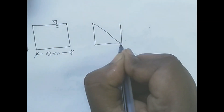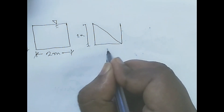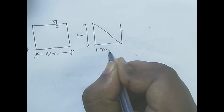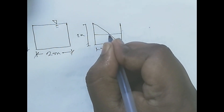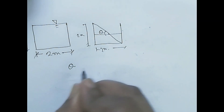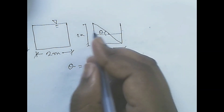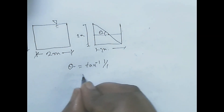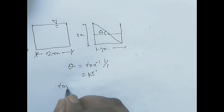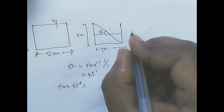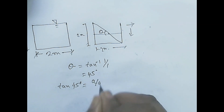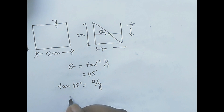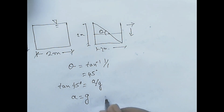How can we make half the liquid spill out? The container is 2 meters. We find the center of gravity position, and the angle theta is given by tan(theta) = a/g. Solving, tan(45°) = a/g, so 45 degrees means a/g = 1, therefore acceleration a equals g. Option D is correct.